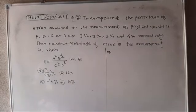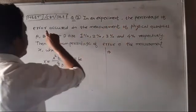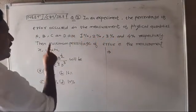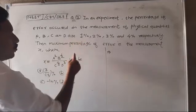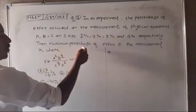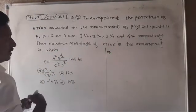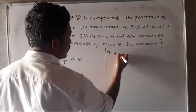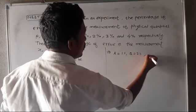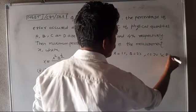Next question: In an experiment, the percentage errors in the measurement of physical quantities A, B, C, and D are 1%, 2%, 3%, and 4% respectively. Find the maximum percentage error in the measurement of X, where A is 1%, B is 2%, C is 3%, and D is 4%.